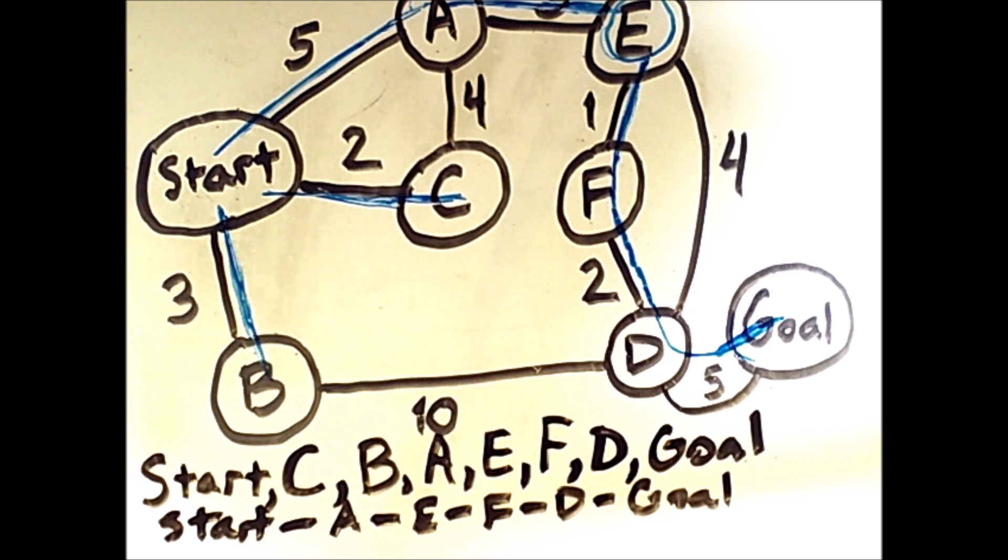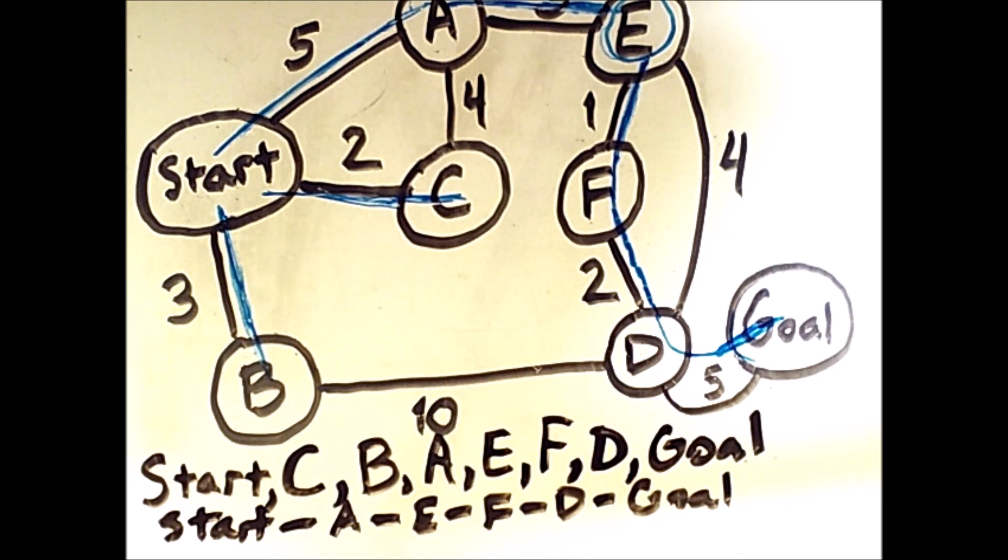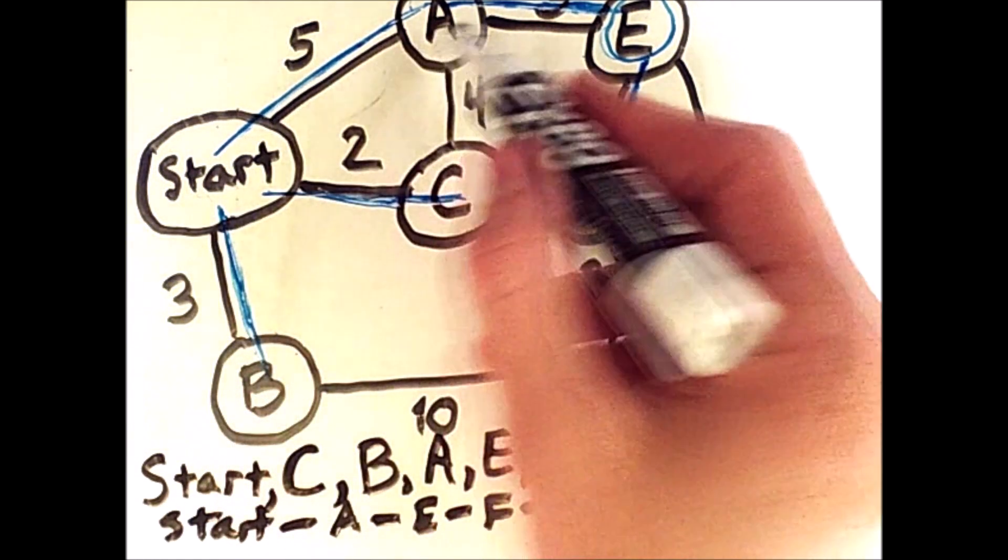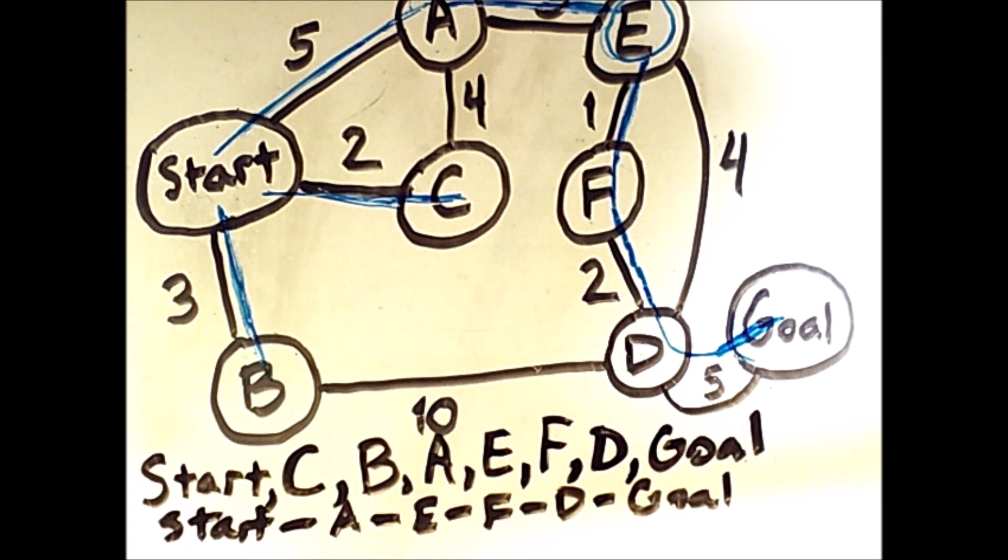So there's a difference between the states we visit and the final optimal path. The final optimal path is only the direct route from the start to the goal. We don't factor in any sort of backtracking, because all of this search happens in a sort of planning stage. We're looking at the problem, planning what our actions will be, and then when an agent actually attempts to solve the problem, the agent will only do the actions that are along the optimal path. All of these other things that were considered were just speculation and are not actually performed by the agent.